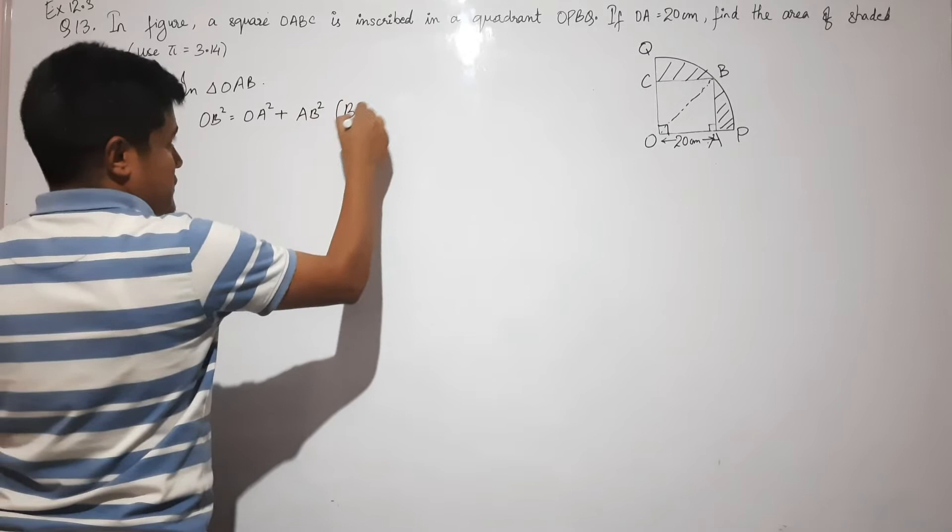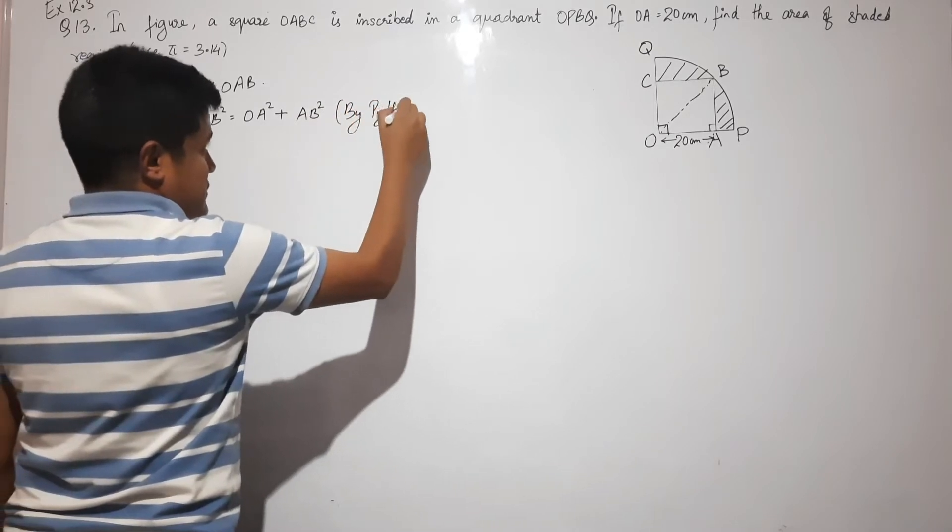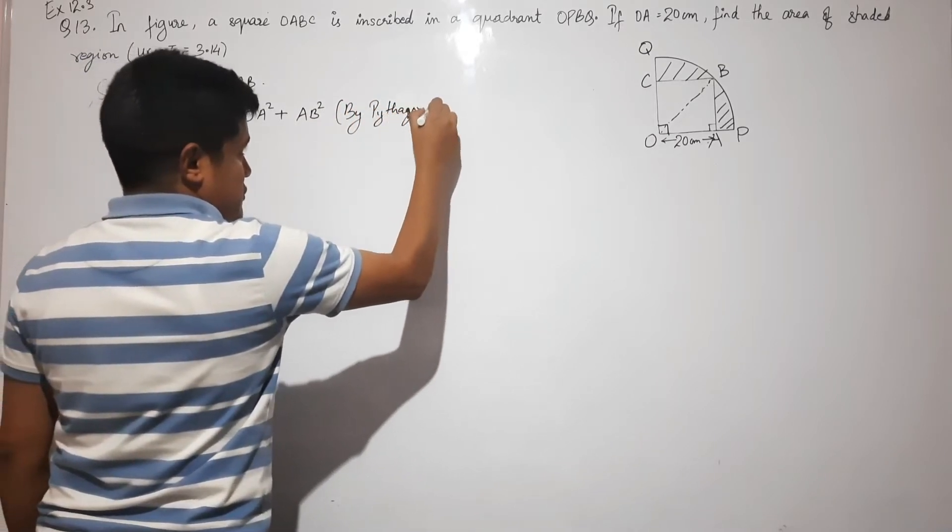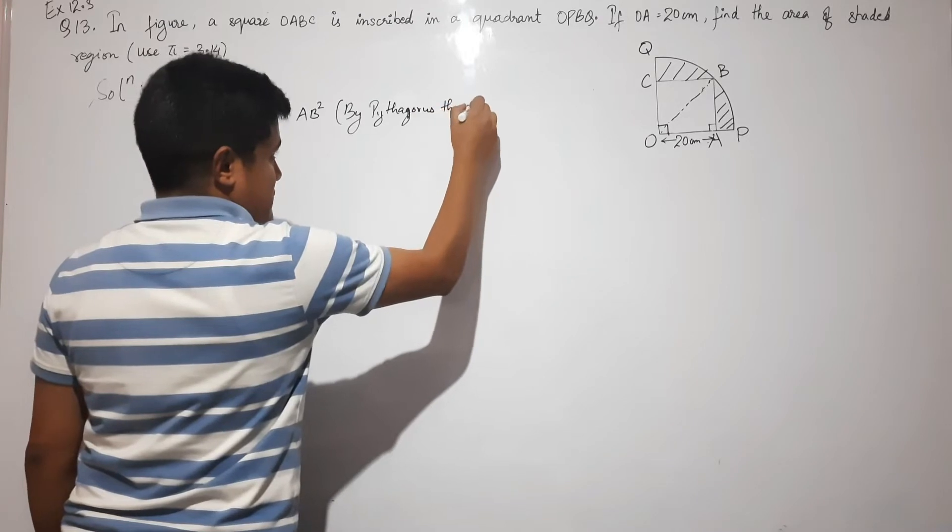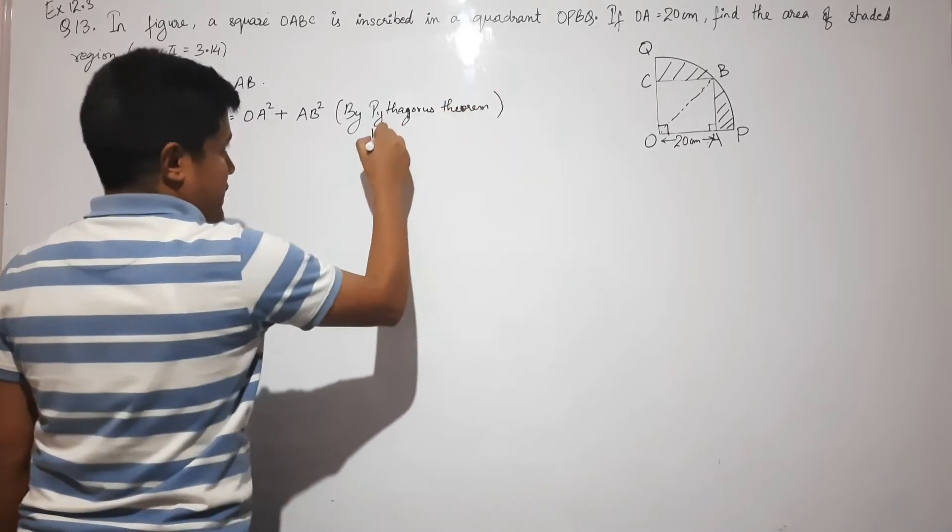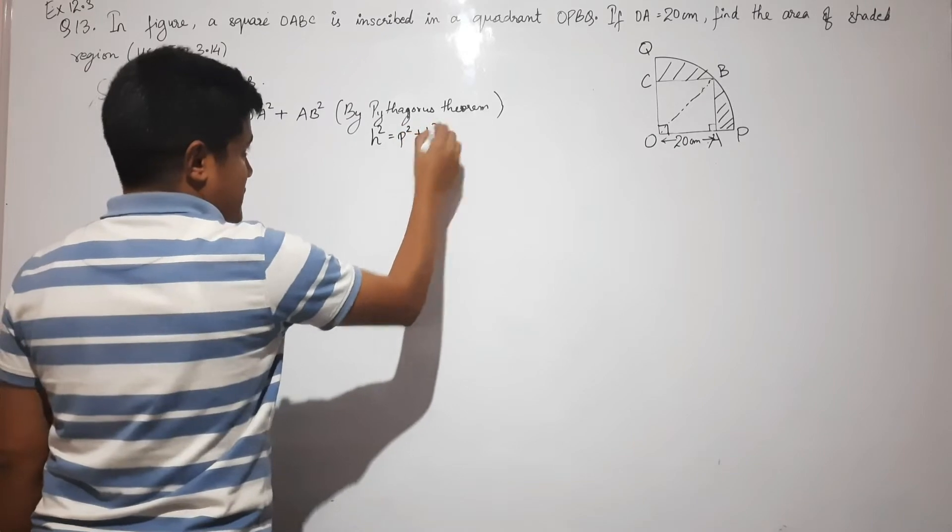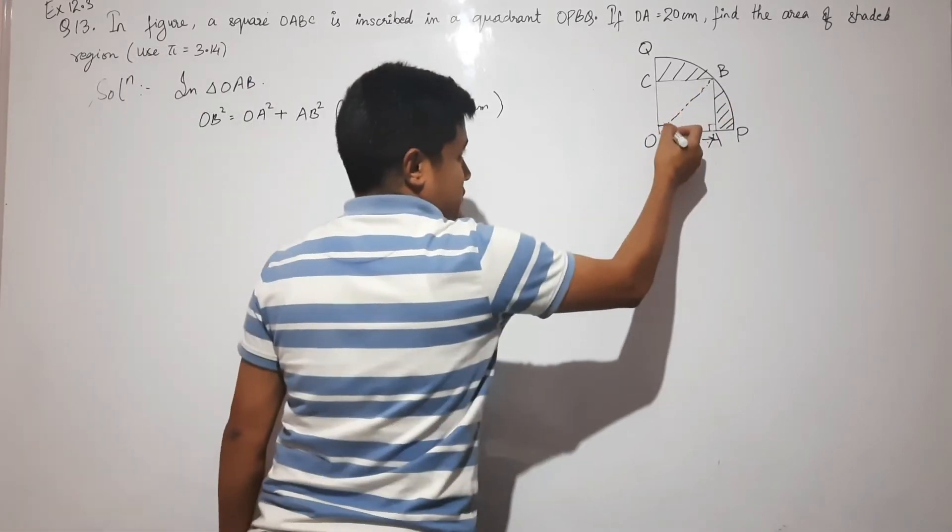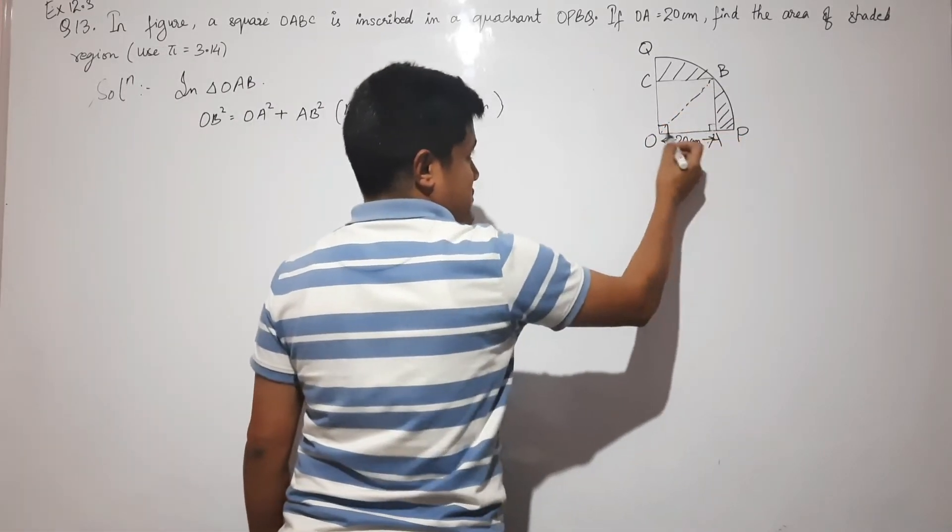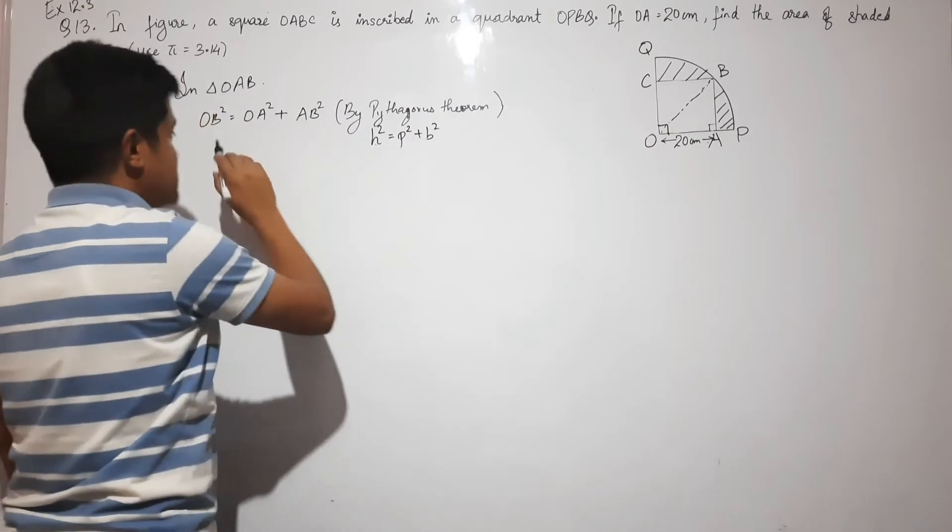By Pythagoras theorem: h² = p² + b². Hypotenuse squared equals perpendicular squared plus base squared. So h is the hypotenuse OB, or OB is the radius R.